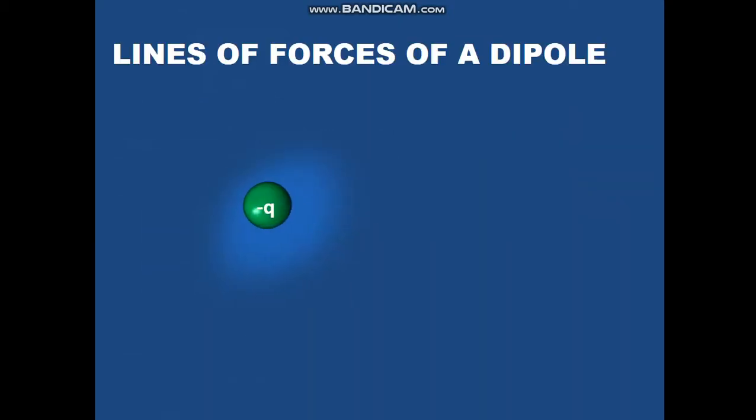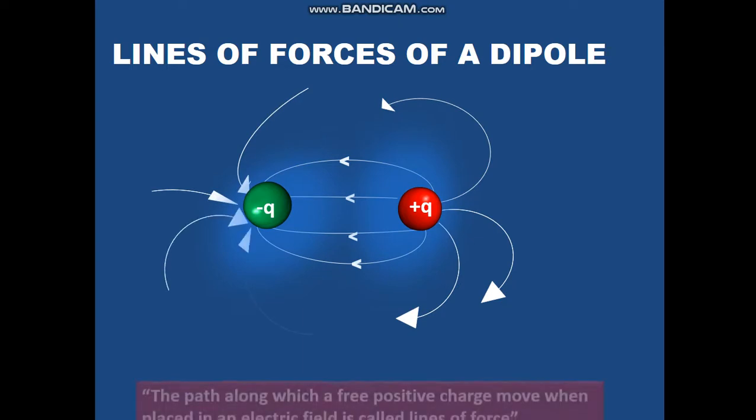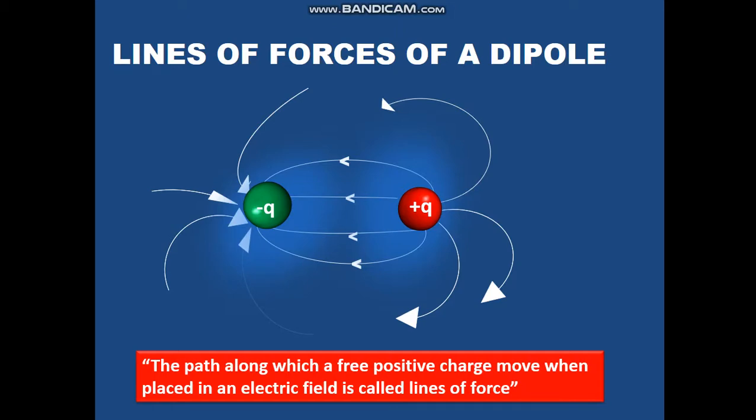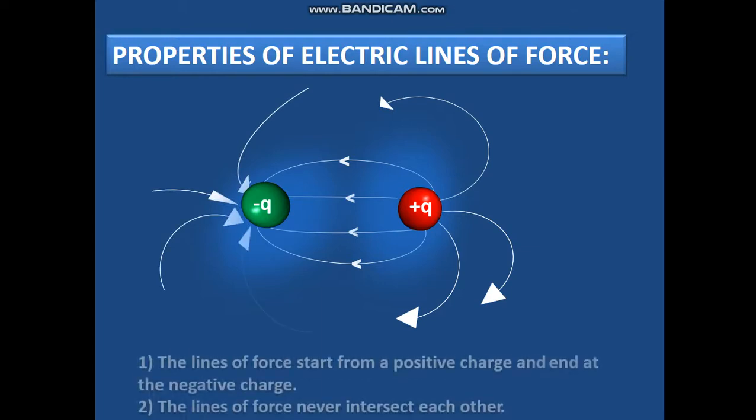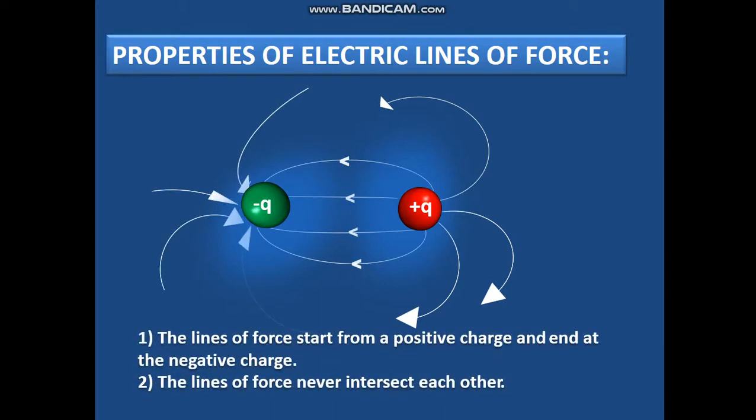Lines of force of a dipole have some properties. These lines are directed from the positive and end on the negative charge. They do not intersect each other. The properties we can state for lines of force are: it begins from the positive, ends on the negative, and they never intersect each other.